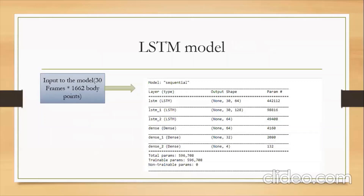Once we've calculated all that, we send it to an LSTM model. The input shape is 30 frames and 1662 body points. We've stacked three LSTM layers, of which two retain memory, and the last LSTM layer connects to a dense layer of size 64, which connects to another dense layer of size 32. Finally, we have four output nodes for calculating the prediction, corresponding to the four actions we have.